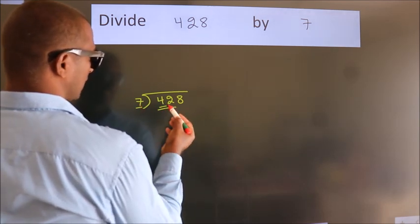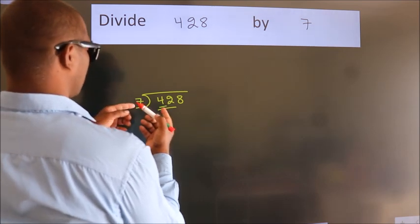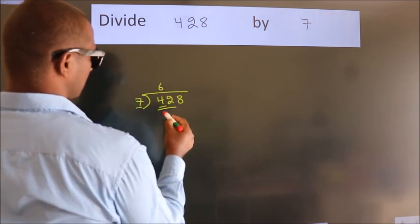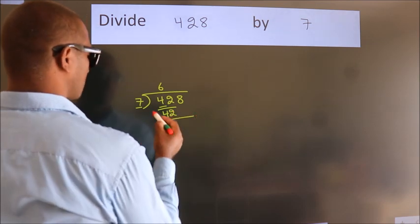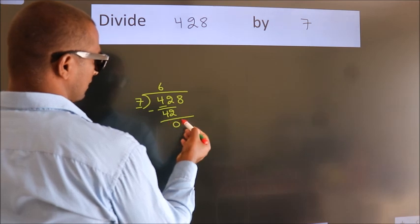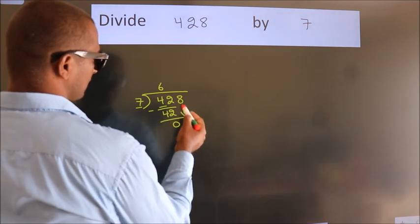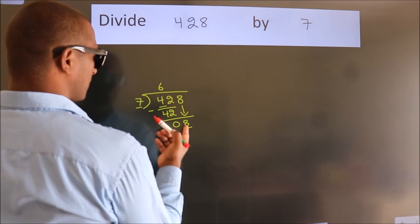Take 42. When do we get 42 in the 7 table? 7 times 6 is 42. Now we subtract and get 0. After this, bring down the beside number, 8. A number close to 8 in the 7 table is 7 times 1.